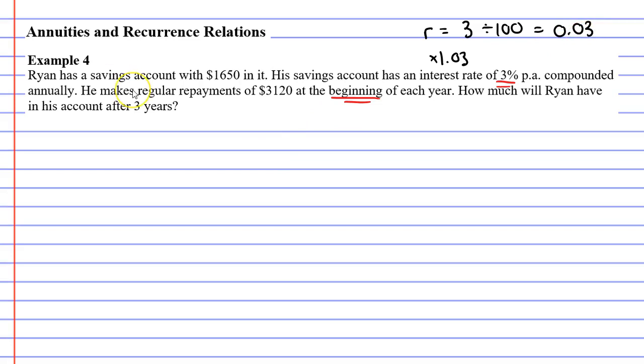Alright so let's start with V0 which is the value of our investment after zero years and we notice that Ryan originally has $1,650 in his account. So this is what V0 will be.